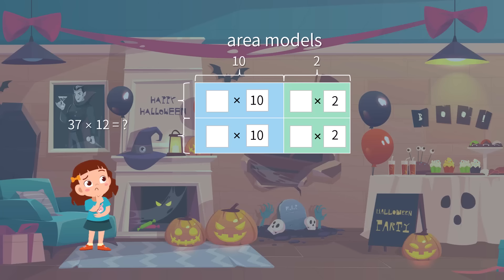For 37, we have three 10s and seven 1s. Thus, it can be divided into 30 plus 7. The equation is now 30 times 10, plus 30 times 2, plus 7 times 10, plus 7 times 2.